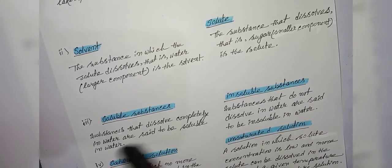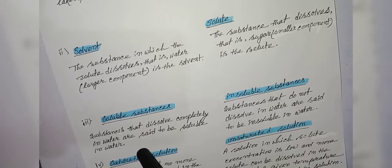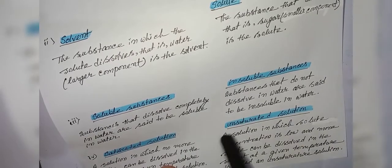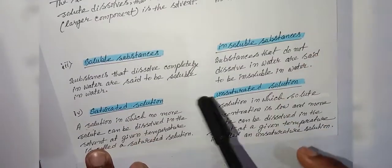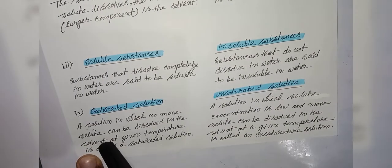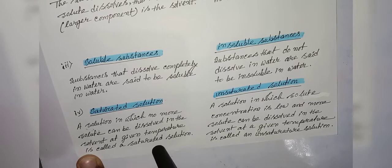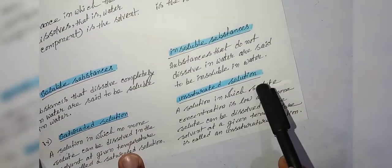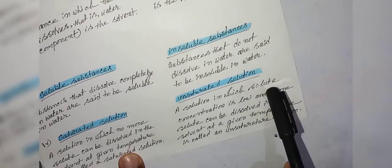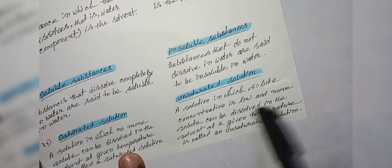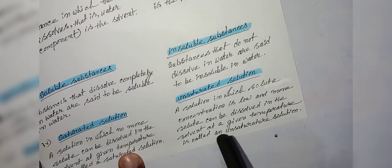Difference between soluble and insoluble substances: Substances that dissolve completely in water are said to be soluble in water; substances that do not dissolve in water are said to be insoluble in water. Saturated vs. unsaturated solution: A solution in which no more solute can be dissolved in the solvent at a given temperature is called a saturated solution. A solution in which the solute concentration is low and more solute can be dissolved at a given temperature is called an unsaturated solution.